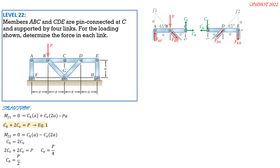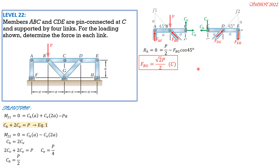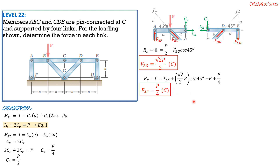Going back to the left FBD, summation of horizontal forces equals zero: P/2 equals P/2 minus F_BG cos(45°). Solving, F_BG equals (√2/2)P in compression. Then summation of vertical forces equals zero: F_AF plus F_BG sin(45°) minus P plus C_V equals zero. Substituting values, F_AF equals P/4 in compression.